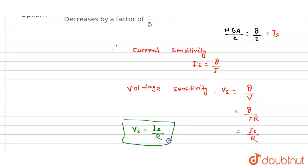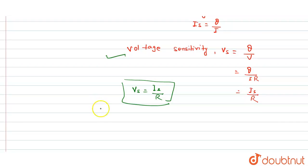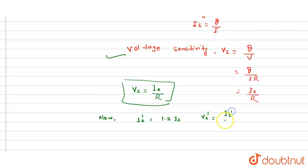Now we find the value of voltage sensitivity. According to the question, the current sensitivity increases by 20%, so IS' = 1.2·IS. Also, the voltage sensitivity becomes Vs' = IS'/R', and since resistance is doubled, R' = 2R.